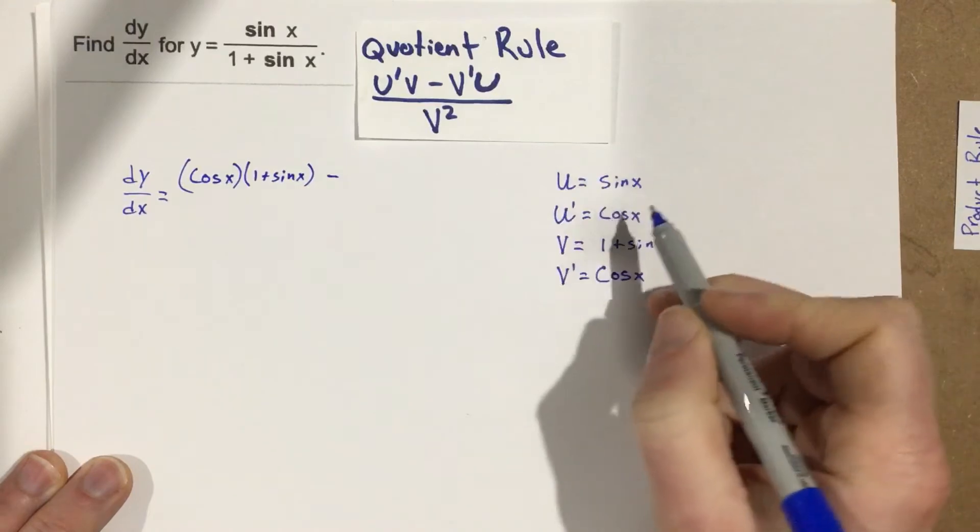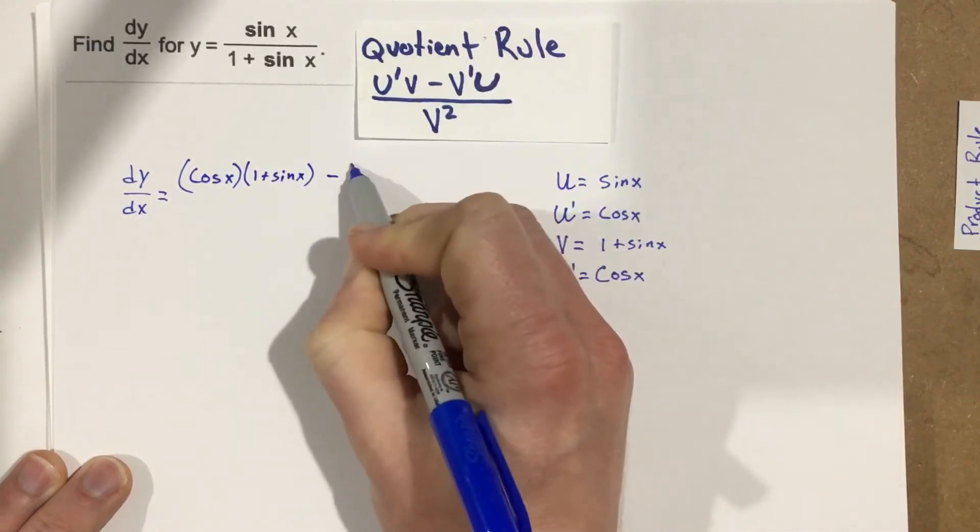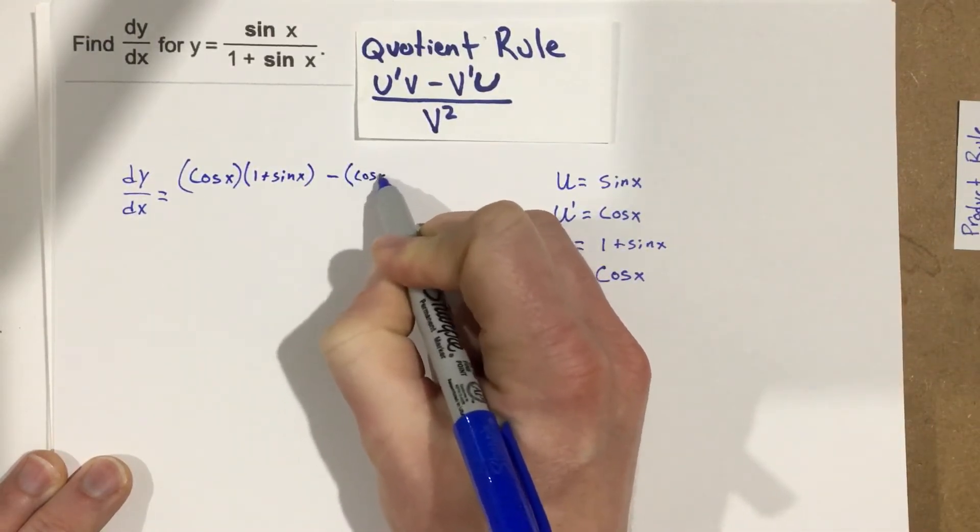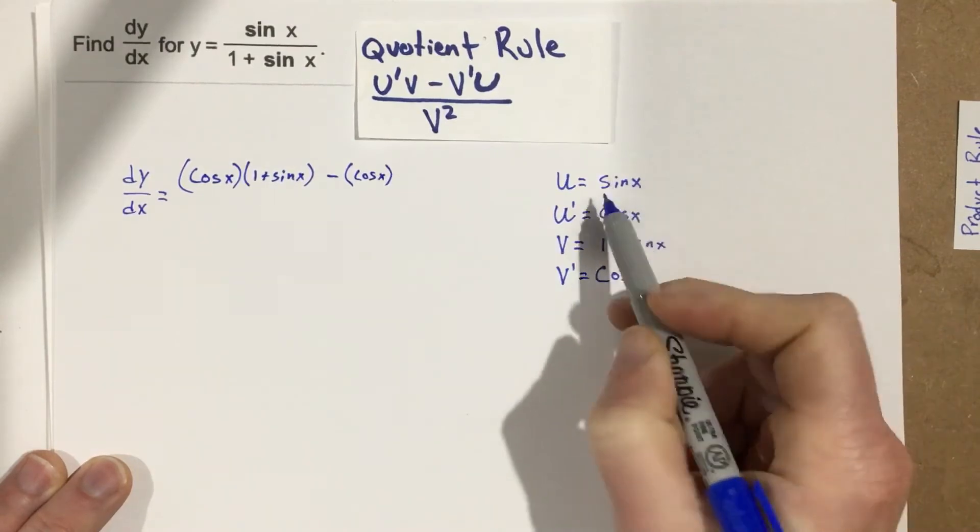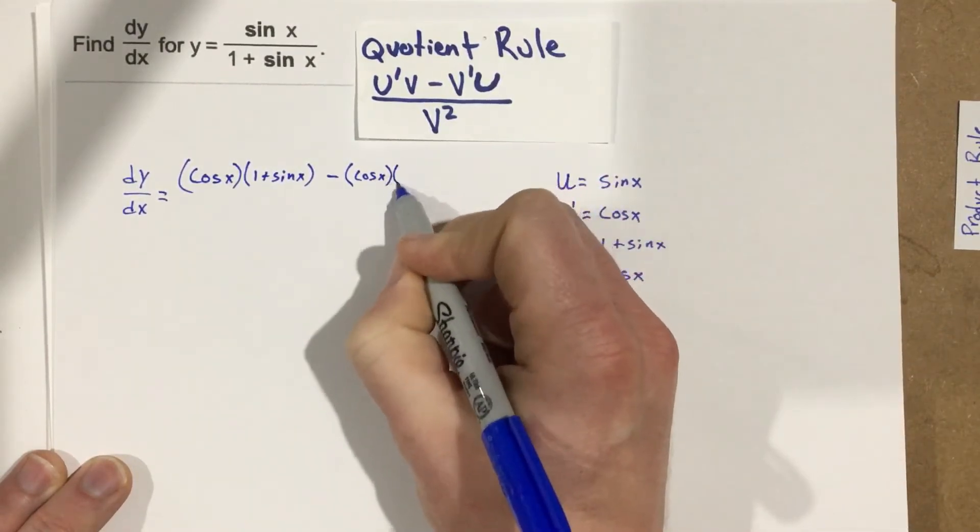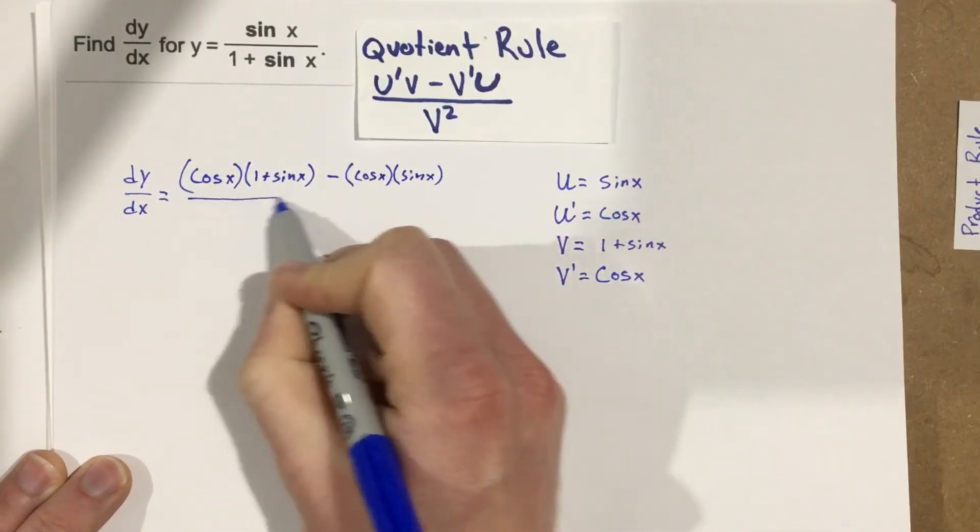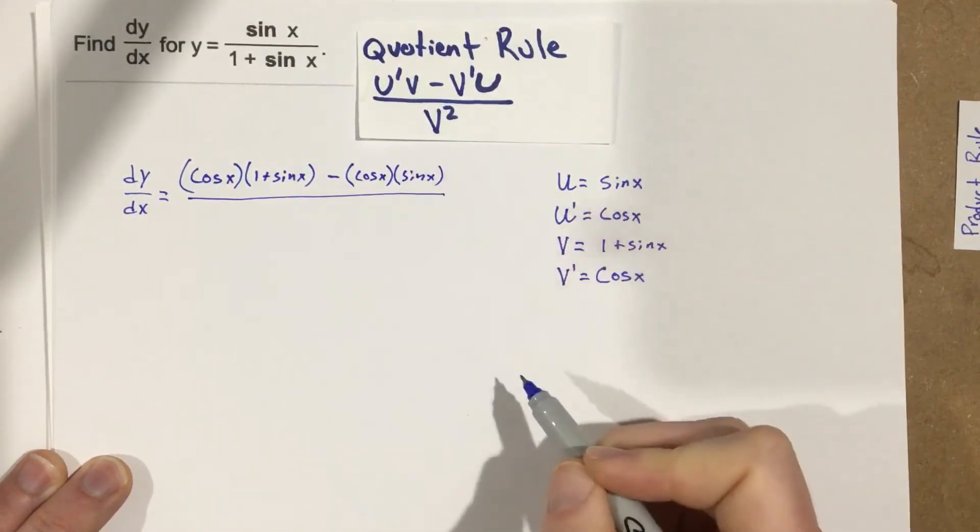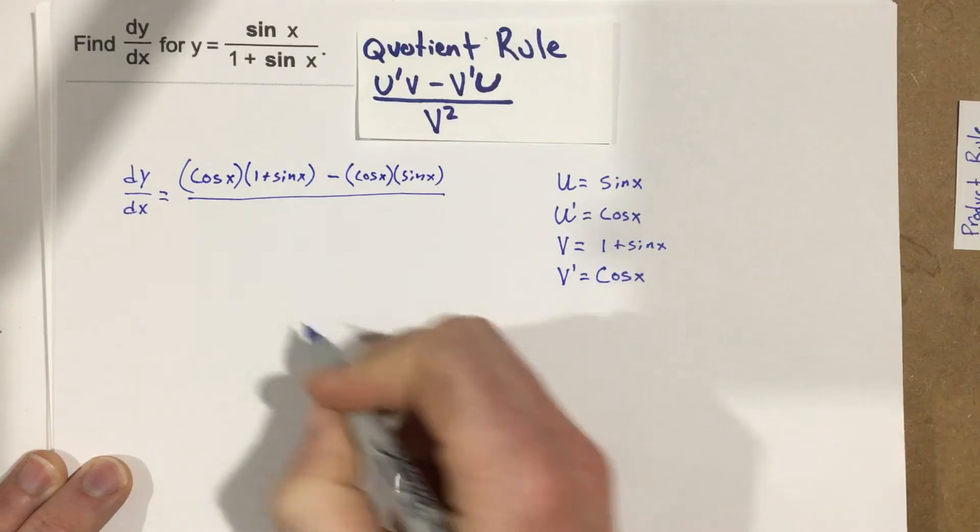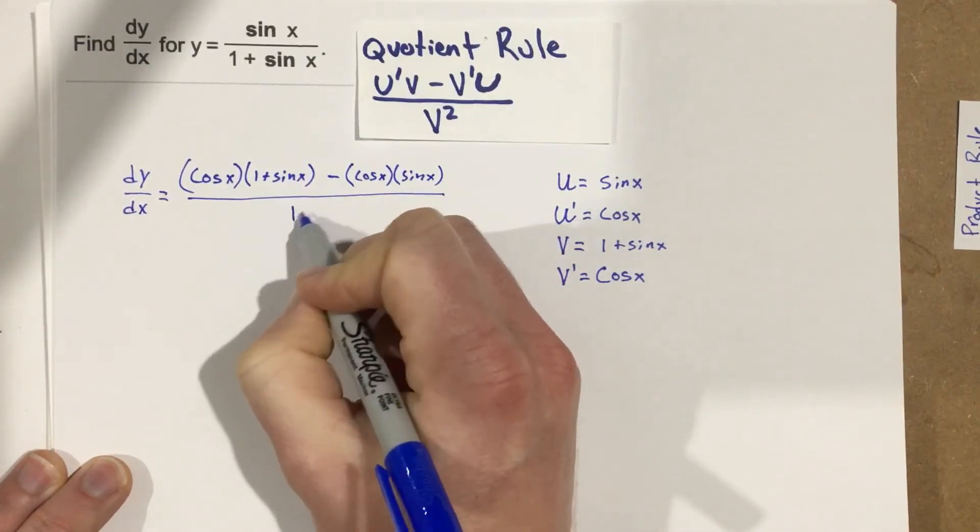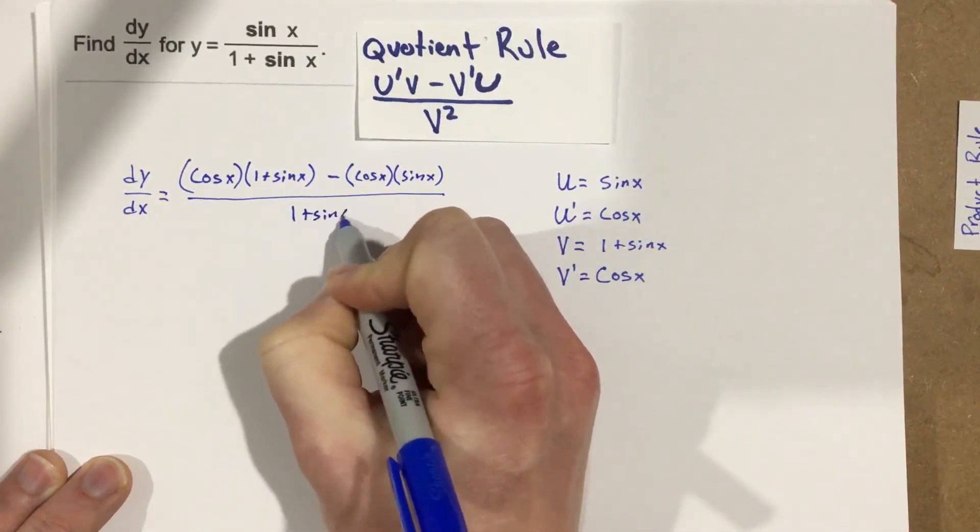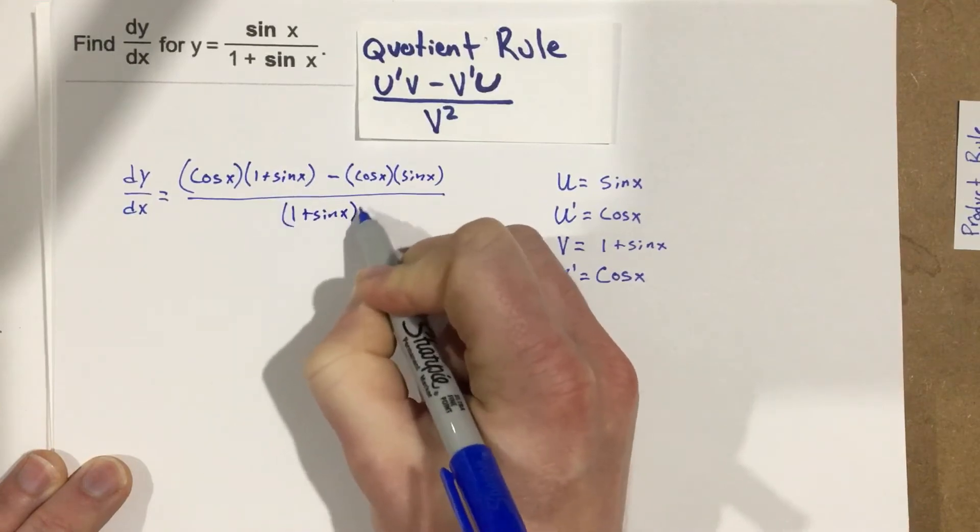Minus v prime, which v prime is cosine x, times u, which is sine x. And this is all over v squared. Well, v squared is 1 plus sine x, so that's 1 plus sine x squared.